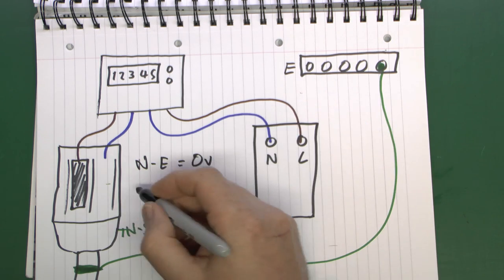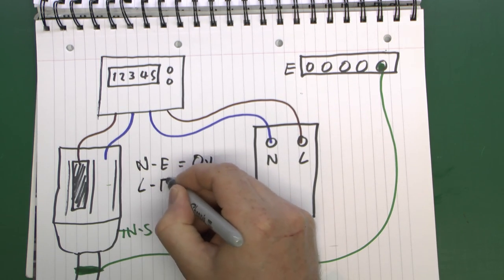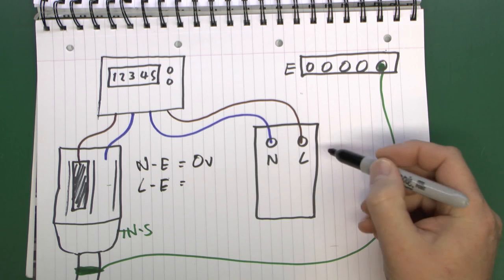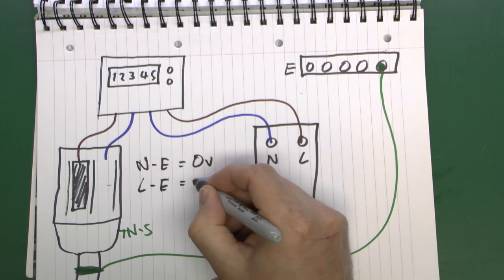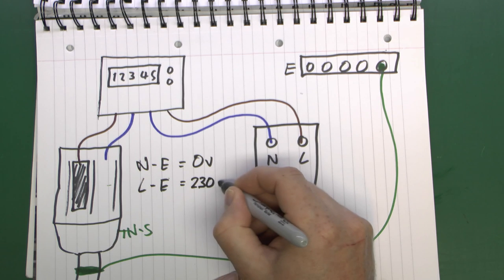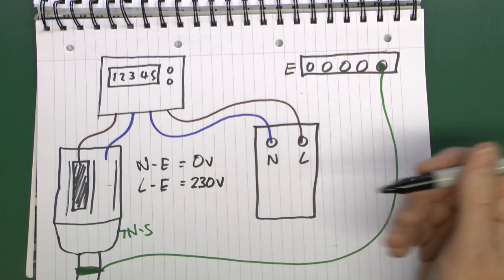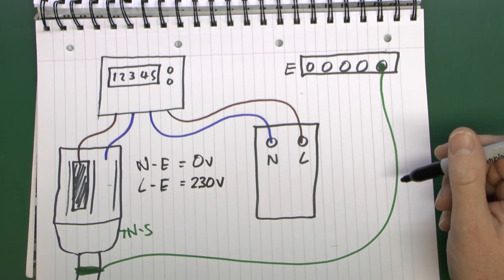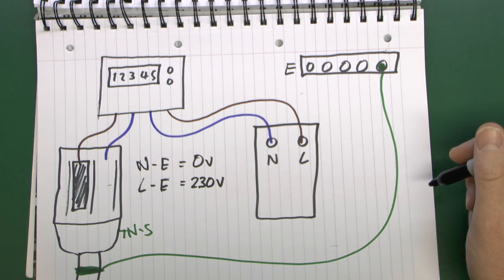And between the line and the earth, you should have the full mains voltage which in the UK is supposed to be around 230 volts. But in reality it can be somewhat higher than that and it usually is, typically in the sort of 240 to 245 kind of area.